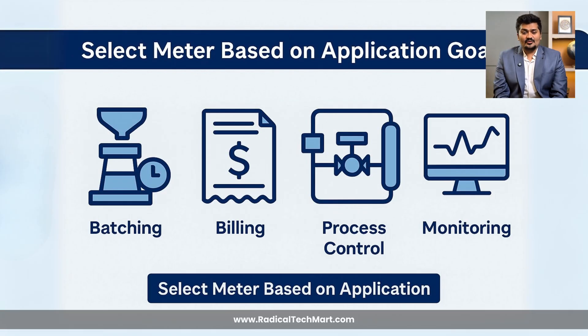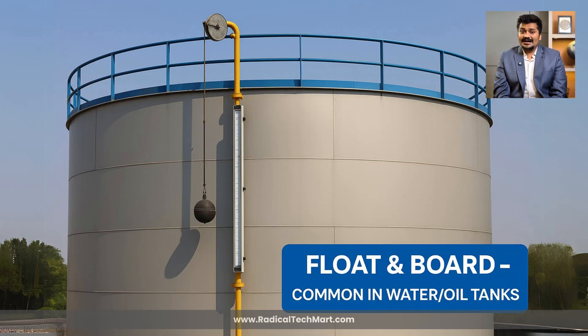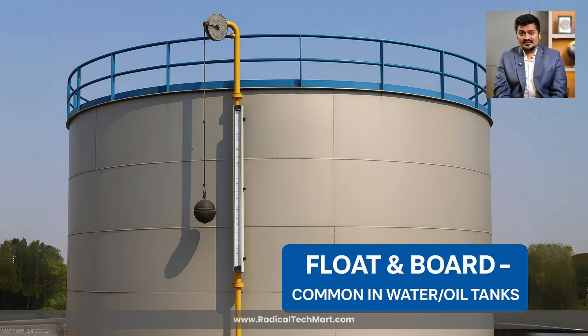Now ask yourself: what's the actual goal of my measurement? Is it for batching, process control, billing, or safety monitoring? Do you need totalized volume, instantaneous flow rate, or both? And how is the flow in your pipeline — is it continuous, pulsating, or intermittent? Choose a flow meter that fits your control strategy.